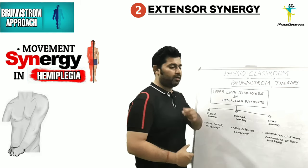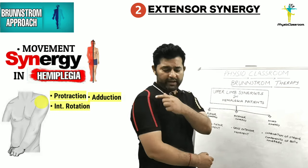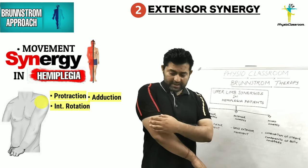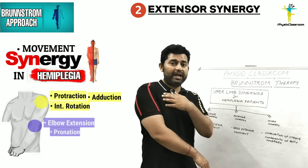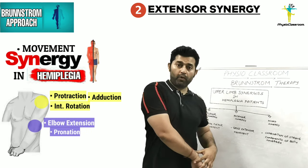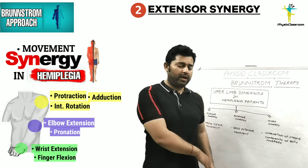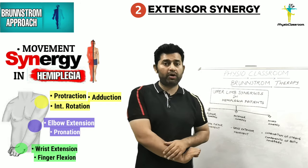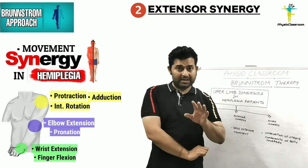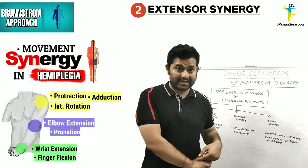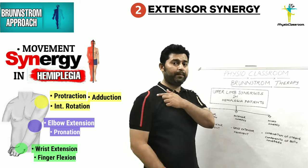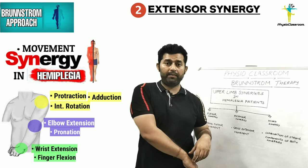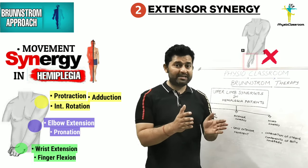Now let's discuss the upper limb extensor synergy in a hemiplegic patient. The extensor synergy components are: shoulder protraction along with shoulder internal rotation and adduction, so the arm crosses to the front of the body. This is accompanied with elbow extension and forearm pronation. The wrist is sometimes seen to be extended along with finger flexion, though wrist extension with finger flexion is not universal to the extensor synergy. The key components are protraction, shoulder internal rotation, adduction, elbow extension, and forearm pronation.